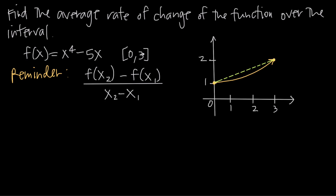When we talk about average rate of change, basically we're just talking about how fast is the function increasing or decreasing, on average, over the interval. This is a graph of a function over the interval 0 to 3 — not the function we're dealing with, just a simple function for illustrating what we mean by average rate of change. We want to figure out how fast this function is increasing on average over the interval 0 to 3.